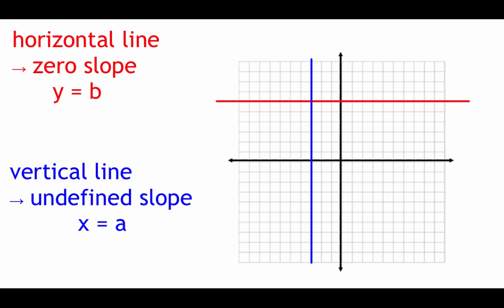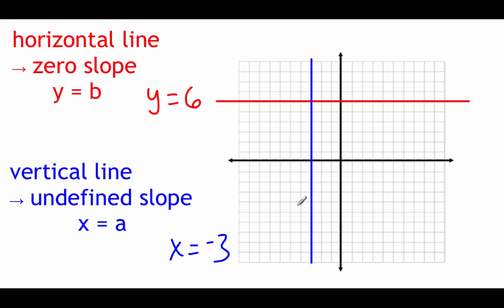There are a couple of special types of linear equations. The first is a flat horizontal line, something that looks like y equals b. Since there's no x value in this equation, our line has a slope of zero. The example drawn here is a flat horizontal line going through a y value of 6, so this is the line y equals 6. The other special type is a straight vertical line, which looks like x equals a, and this has an undefined slope. The vertical blue line on our graph has the equation x equals negative 3, since it's going through the x-axis at a value of negative 3.